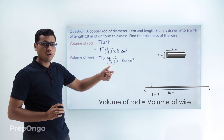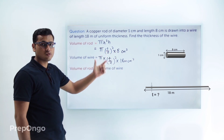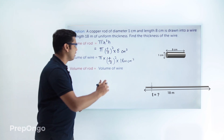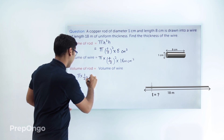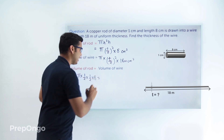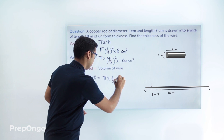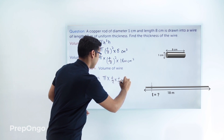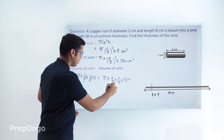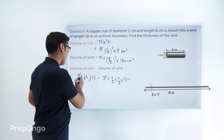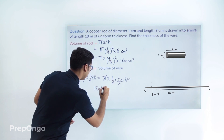Since these two volumes are equal, we equate them: π × (1/2)² × 8 = π × (t/2)² × 1800. Pi cancels from both sides, and simplifying gives 1800 t² = 8.